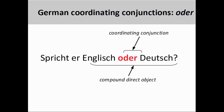The coordinating conjunction 'oder,' meaning 'or,' is used when presenting alternatives. These alternatives can be in the form of words or independent clauses. For example, in the sentence 'Spricht er Englisch oder Deutsch?' — 'Does he speak English or German?' — 'oder' is used to form an alternative between the languages that the subject speaks. Both languages are the direct objects of the verb 'spricht,' and therefore form a compound direct object comprised of two words and a coordinating conjunction.